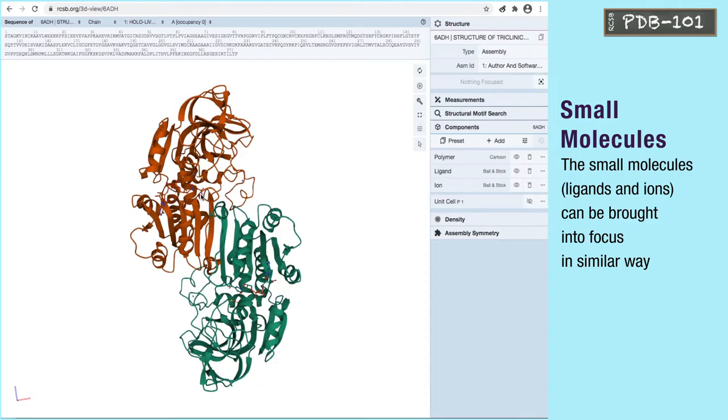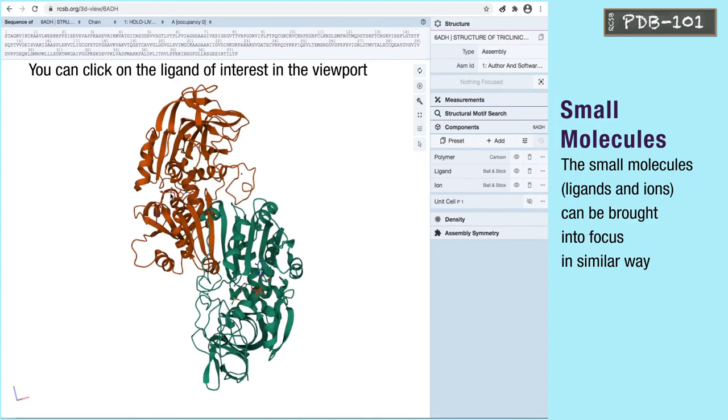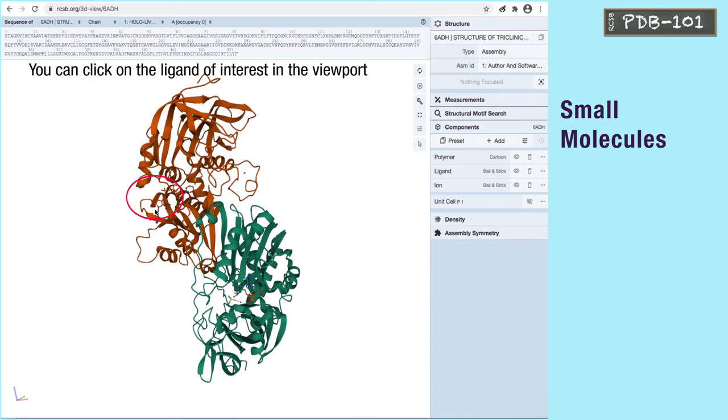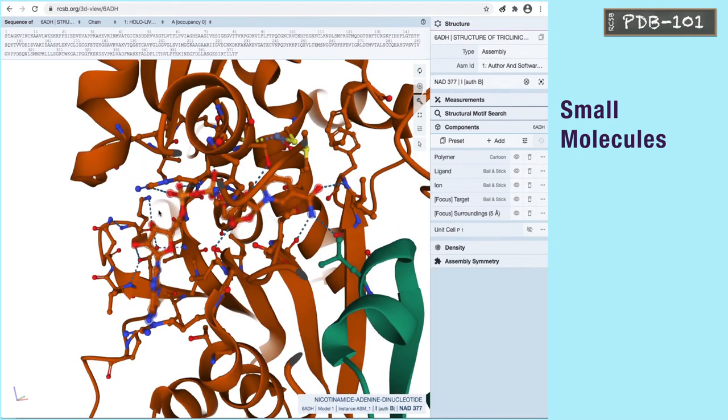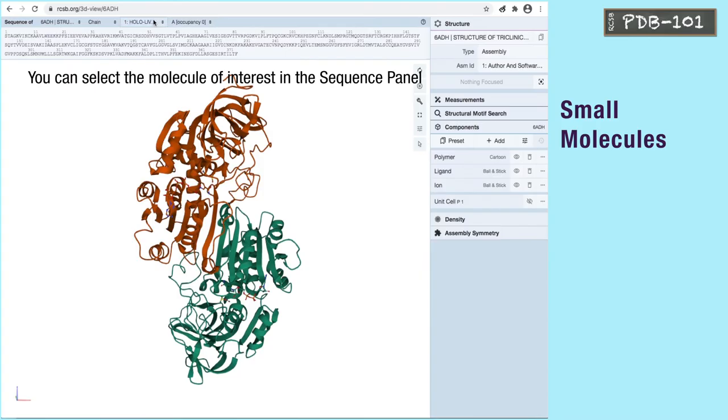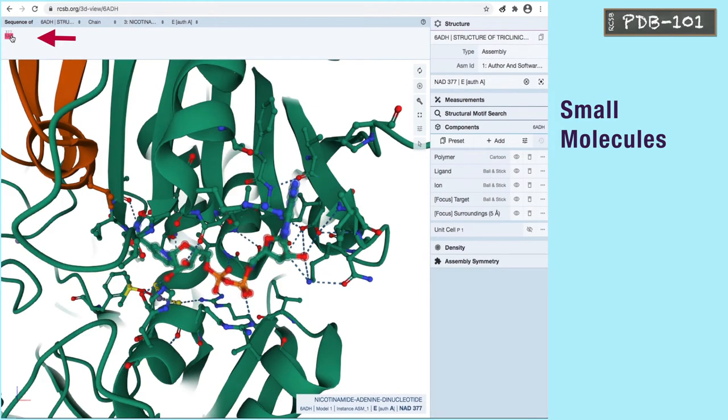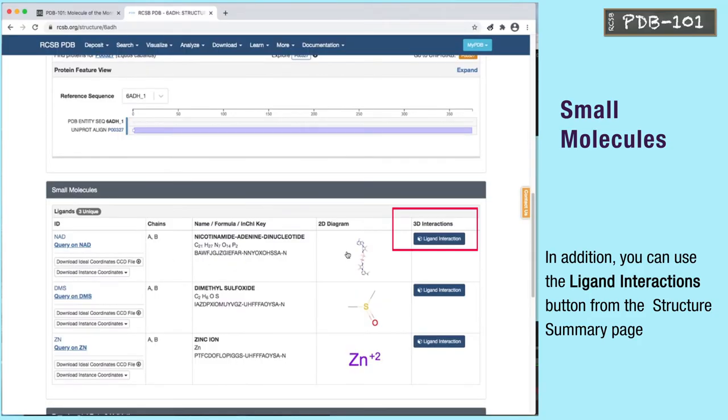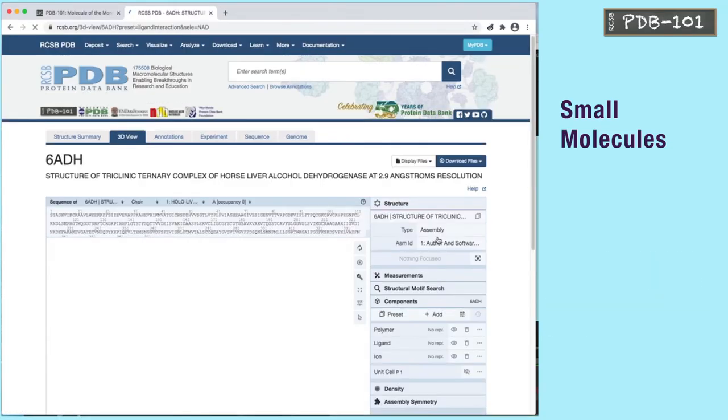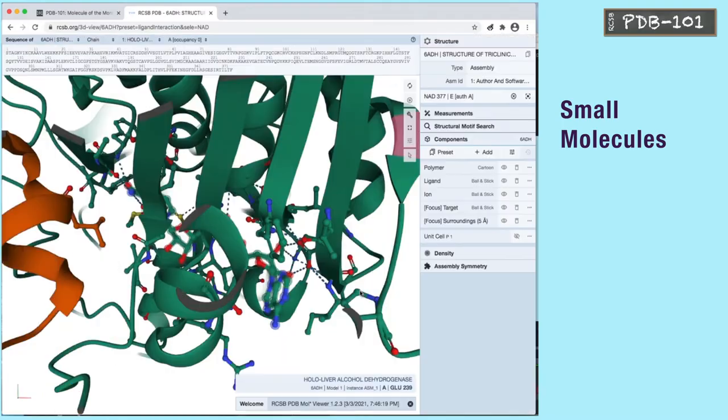The small molecules can be brought into focus in a similar way. You can click on the ligand of interest in the viewport. You can click on the molecule of interest in the sequence panel. In addition, you can use the ligand interaction button from the structure summary page.